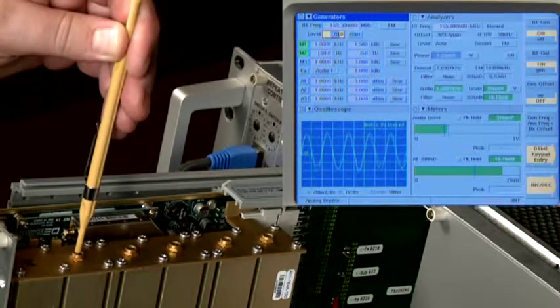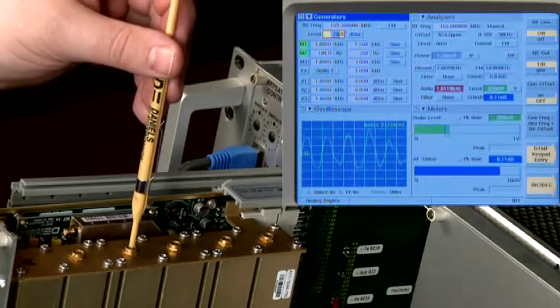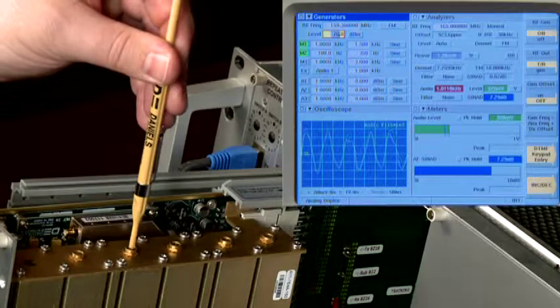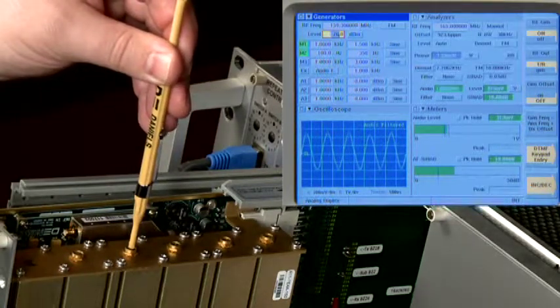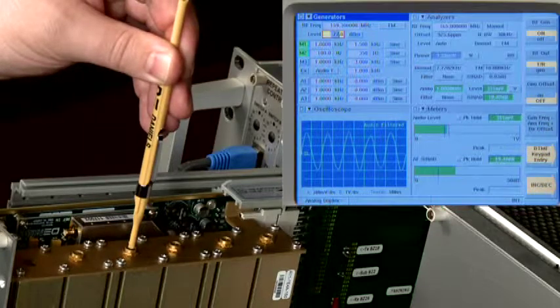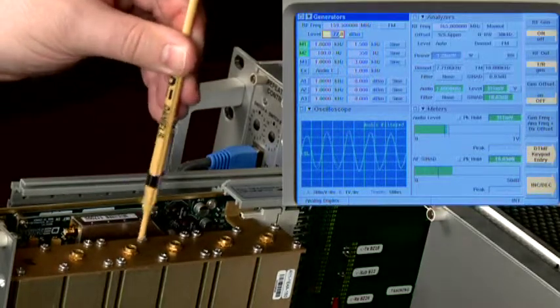Continue reducing the signal generator level as the capacitors are tuned. There is no specific sequence to tune the capacitors. If a capacitor is turned clockwise, all of the capacitors should be turned the same way for proper tuning. All of the capacitors should be at approximately the same depth within the cavity when properly tuned.